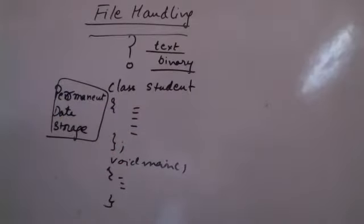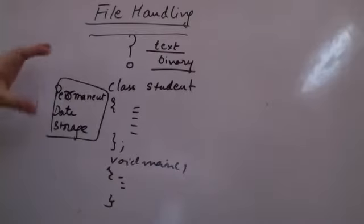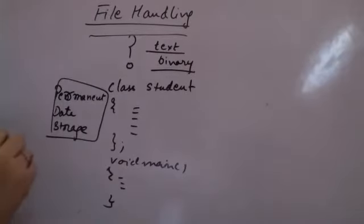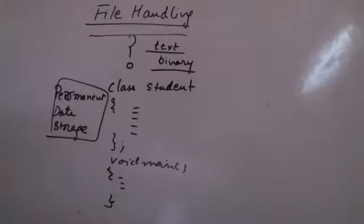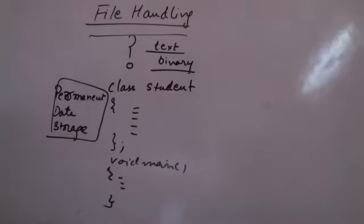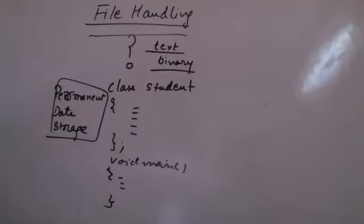What do I mean by permanent data storage? I have written my data in the file, so whenever I need the data I will open the file, read the data, and if I need to update it I might update the data, then just keep that file. All of you know that there are many files available in computers — right from video files, music files, images, text files, and project files.